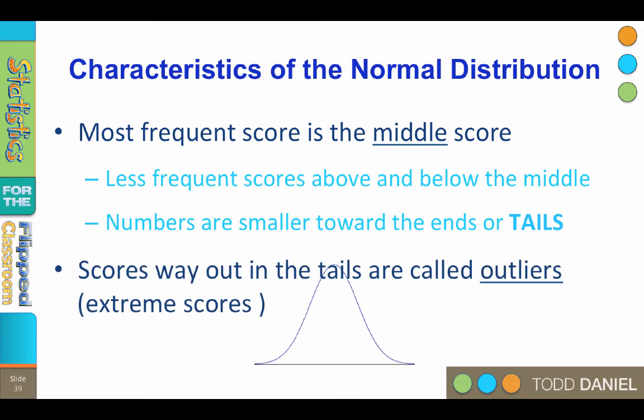Extreme scores way out on the end of the curve are called outliers. Think of people who you know who are unusually tall or unusually short. How many super tall or super short people do you know? Probably not very many. That is because most people are not super tall or super short — most people are in the middle, near the average. So the frequency of very tall people is less than the frequency of average height people.